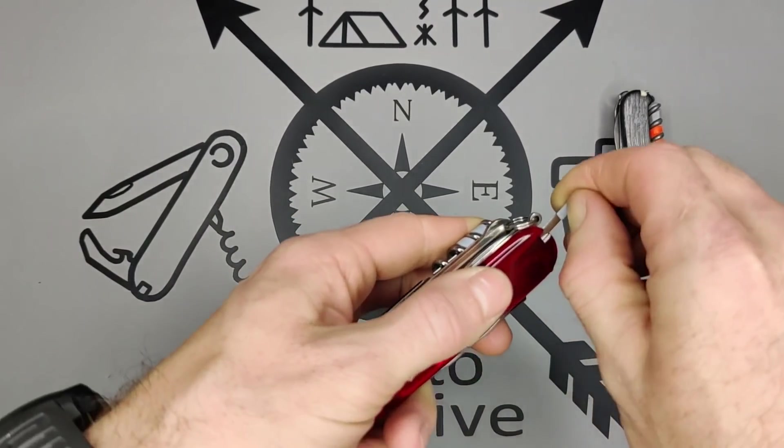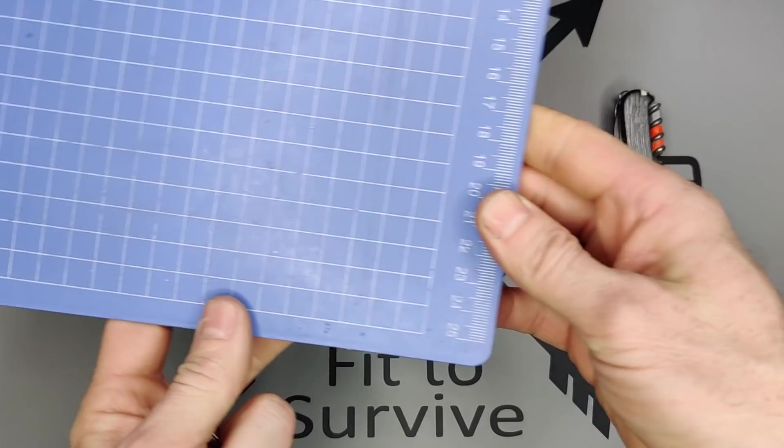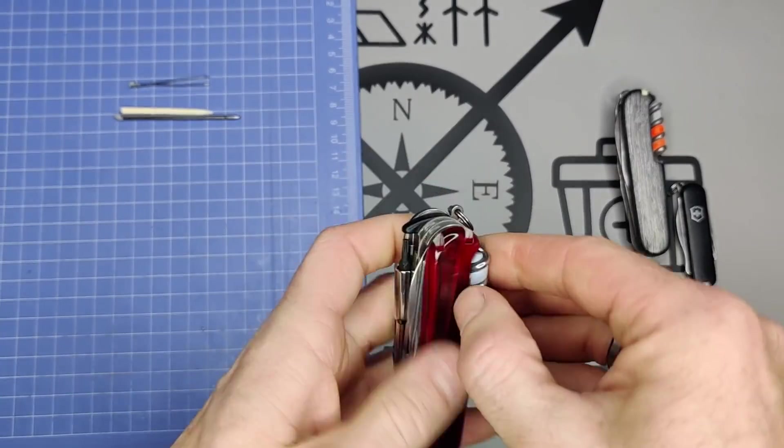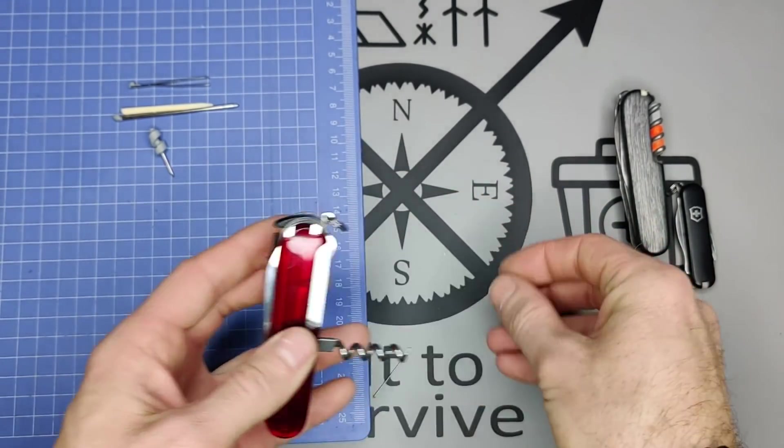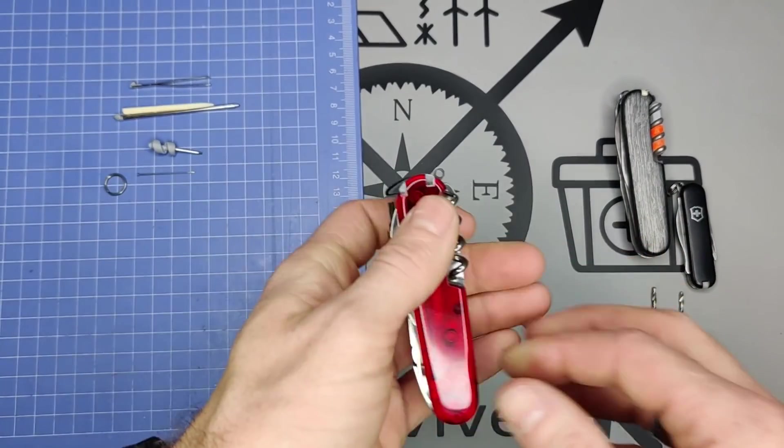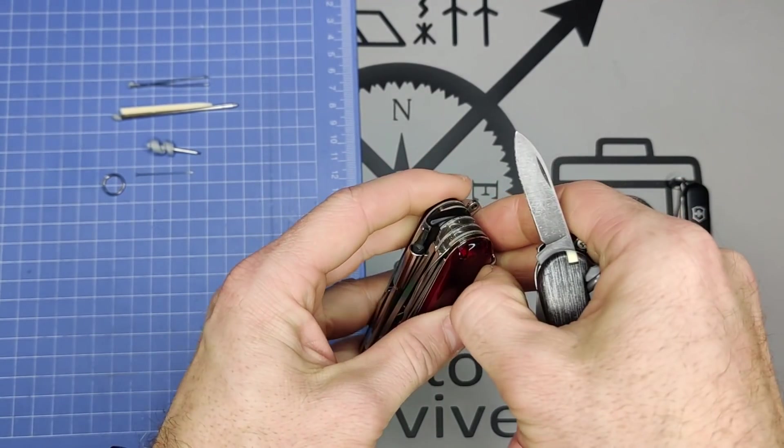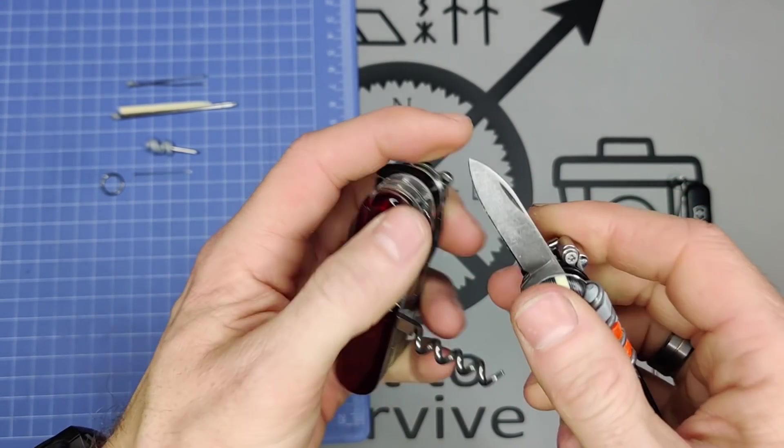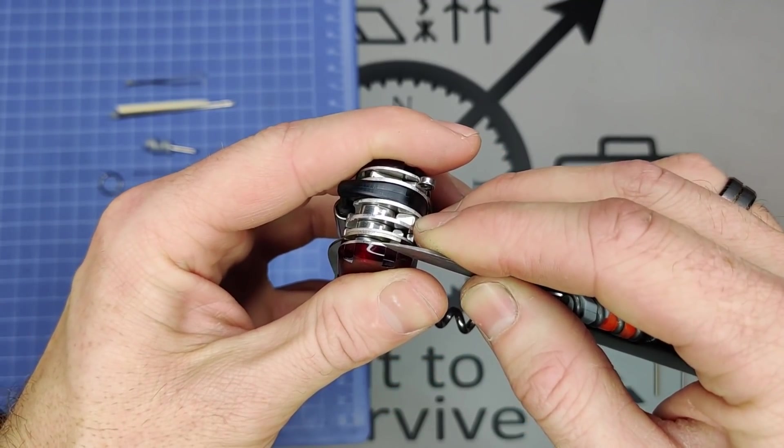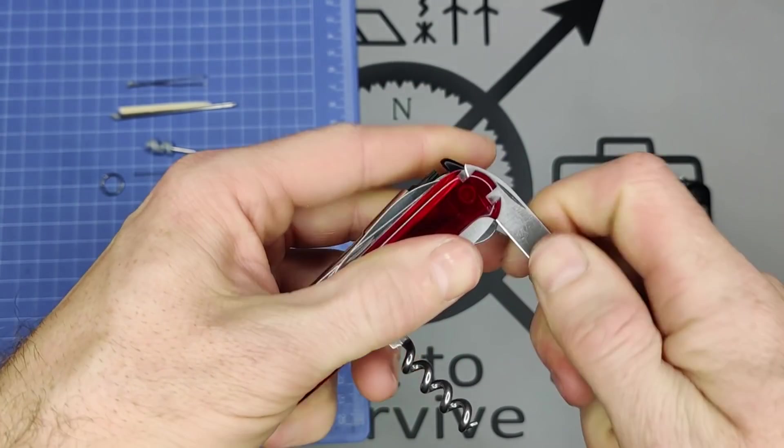All right, so first thing we're going to do is begin removing everything and taking off the scales. We're going to carefully begin prying this scale off. What I do is I use a small blade and just work my way right underneath the scale.